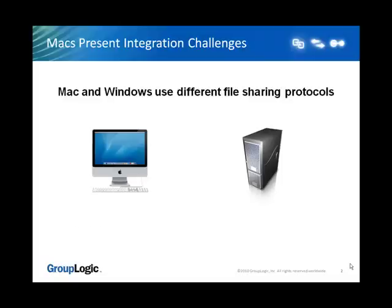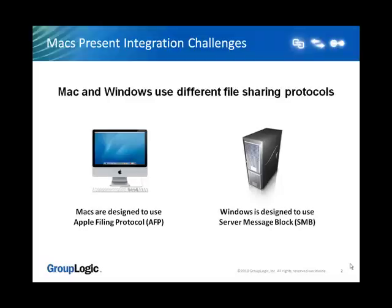Mac clients are designed to use AFP, or Apple Filing Protocol, as their primary means of connecting to file servers. Windows File Sharing is designed to use SMB, or Server Messaging Block Protocol, and unfortunately this protocol is not as reliable and compatible as AFP when used by Mac clients.